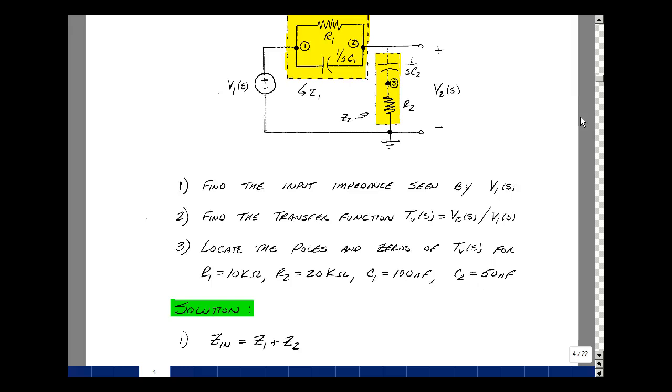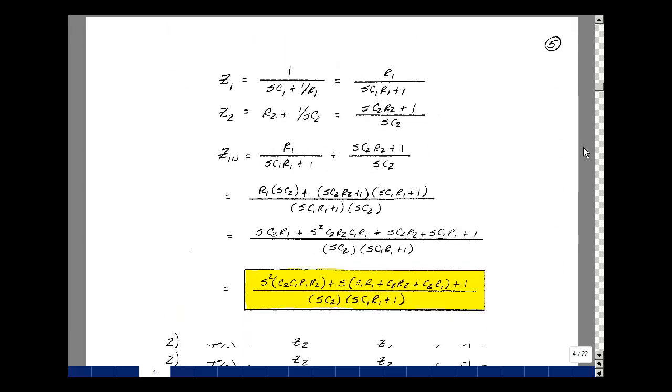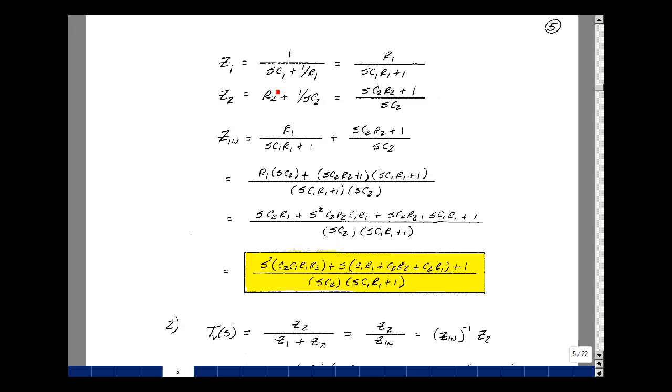Let's find the impedance looking in. This is going to be the series combination of Z1 and Z2. Our impedance had a capacitor and resistor in parallel. Let's take their admittances and add them, and then take their reciprocal. So the admittance of the capacitor is sC1, and the conductance of the resistance is 1 over R1. Then multiply through by R1, and you get R1 over sC1R1 plus 1.